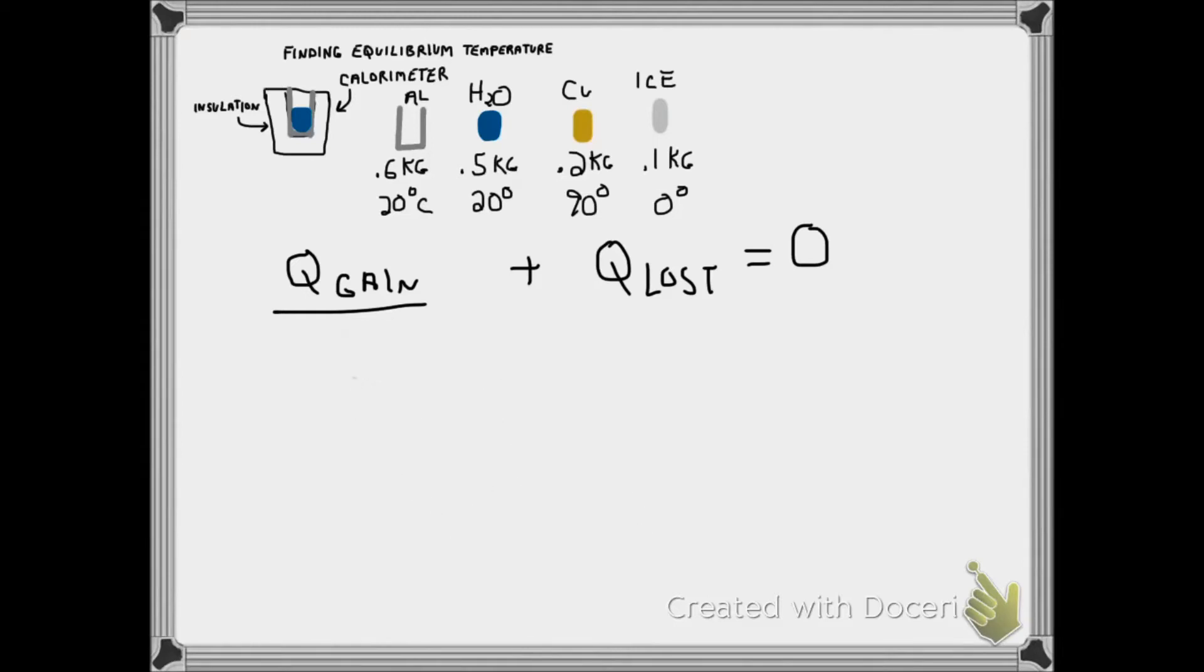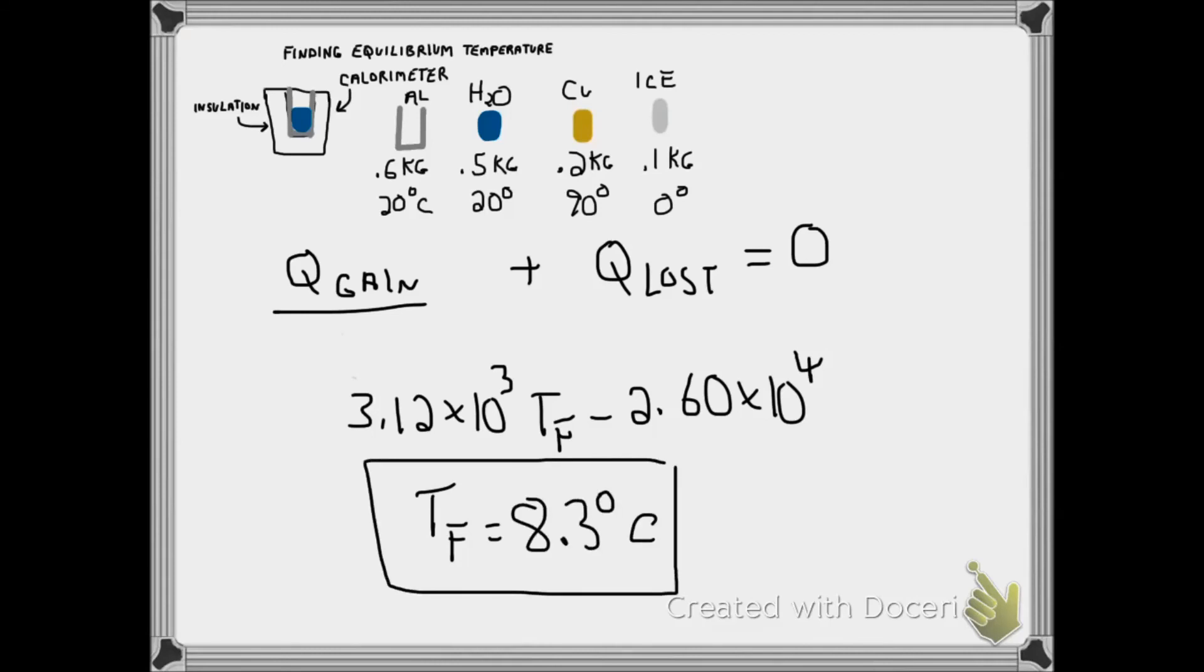It's a little scarier than that, but when we do the actual numbers, we come up with 3.12 times 10 to the third T sub f. When we combine the items that don't have T sub f, it's 2.6 times 10 to the fourth. We subtract that and get a final temperature of 8.3 degrees.